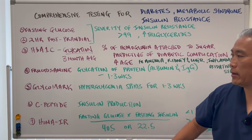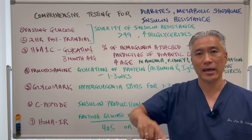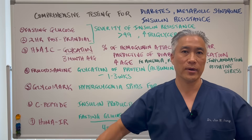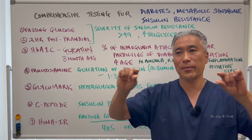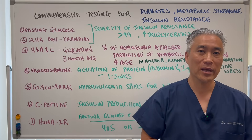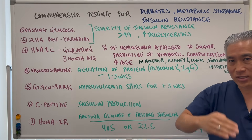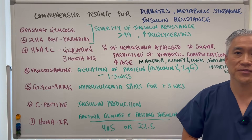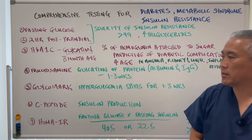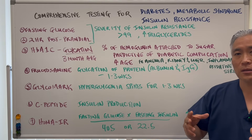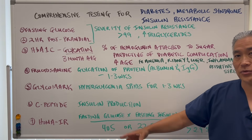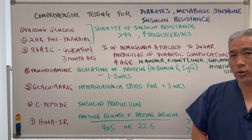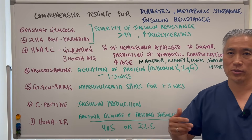Glycomark helps look at hyperglycemic spikes — the up and down of blood sugar throughout the day. Even if your average looks normal and hemoglobin A1c appears normal, you could still have significant spikes causing insulin and glucose surges and then drops, and glycomark will capture that. C-peptide is tied to insulin production and has a longer half-life because it is filtered through the kidneys, making it a reliable indicator to also help distinguish type 1 from type 2 diabetes.